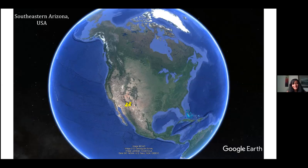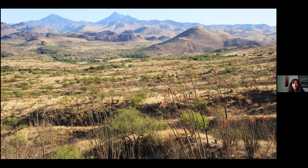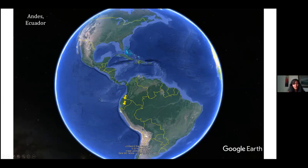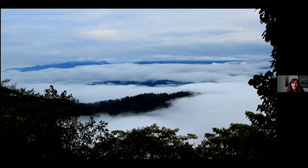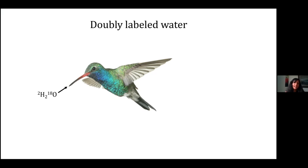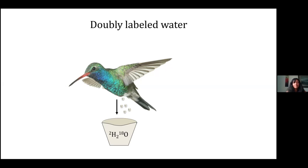We went to Arizona, to these beautiful deserts where hummingbirds feed on little red flowers, and to Ecuador — partly in cloud forests, which are beautiful and blanketed with clouds every evening, and also to the high-elevation Andes. We used a method called doubly labeled water to study the daily energy expenditure of these animals — how much energy they use in 24 hours. We feed or inject a double isotopic form of water into them, collect a blood sample and let them go. Twenty-four hours later, we get another blood sample. The difference between the isotopic concentrations of hydrogen and oxygen tells us how much carbon dioxide they've breathed out, which is a great measure for energy expenditure. So we know how much energy they've spent in the wild in 24 hours.